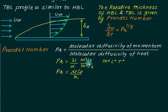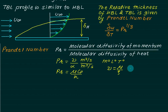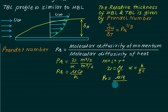The Prandtl number is nu divided by alpha, which is dimensionless (m^0 L^0 T^0). Substituting nu equals mu/rho and alpha equals k/(rho times c), the rho cancels and we get Prandtl number equals mu times cp divided by k.